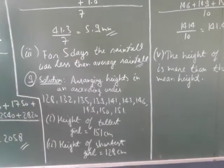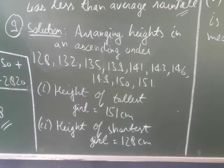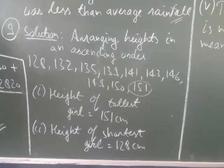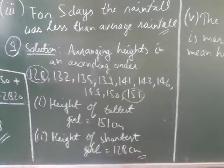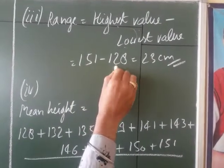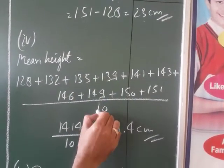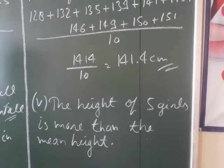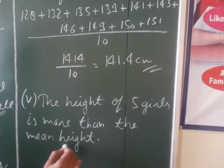Ninth question: heights of 10 girls were measured in centimetres. Arrange in ascending order. The tallest girl is 151 centimetres and the shortest is 128 centimetres. Range = 23 centimetres. Mean height = sum of all observations divided by number of observations = 1414 divided by 10 = 141.4 centimetres. Five girls have heights more than the mean height.